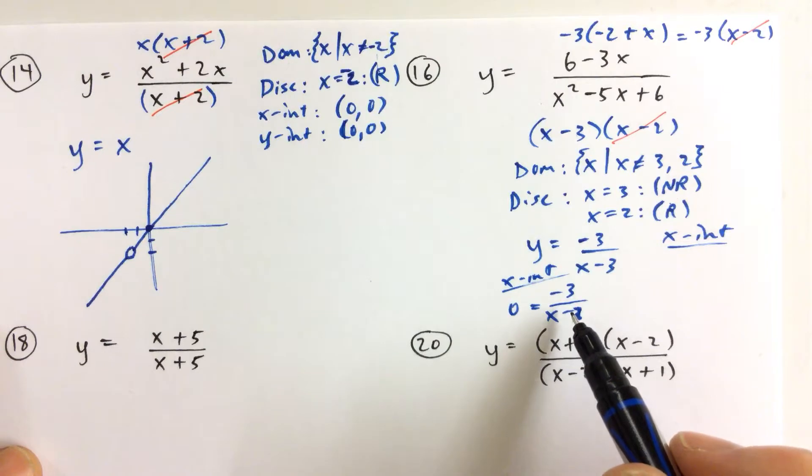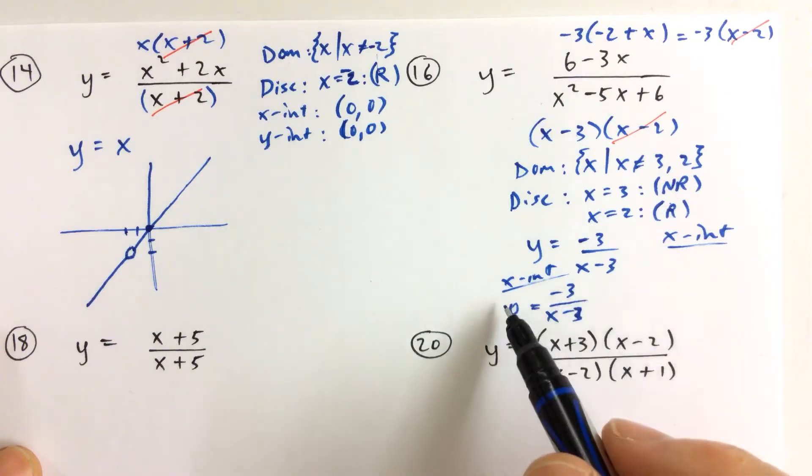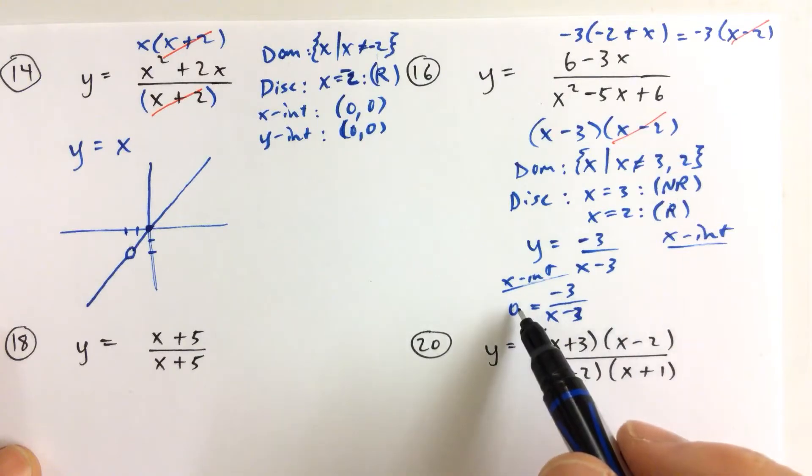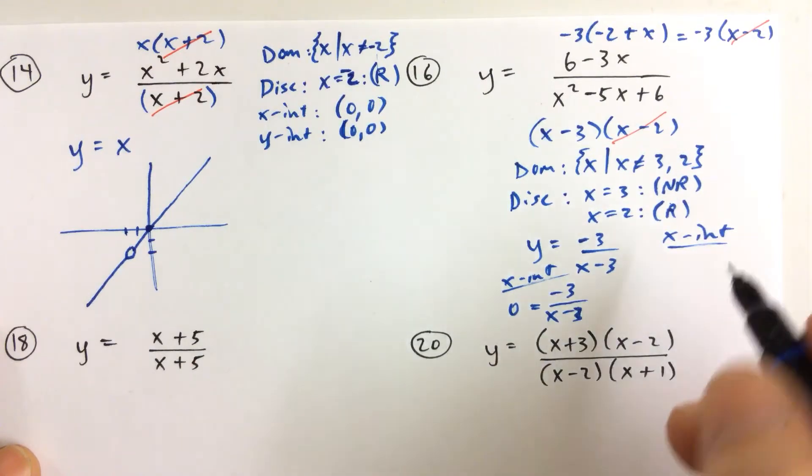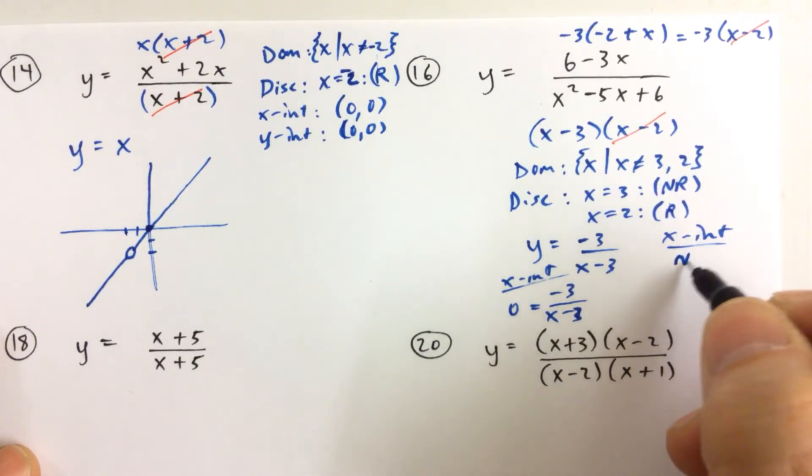A fraction can only be equal to 0 when the numerator is equal to 0 because if you multiplied both sides by x minus 3, you'd get negative 3 equals 0. So the numerator can never be equal to 0. And so the fraction can never be equal to 0. So there is no x-intercept, so we write none.